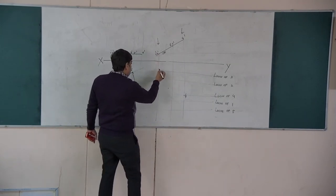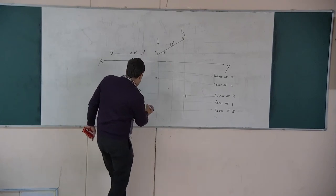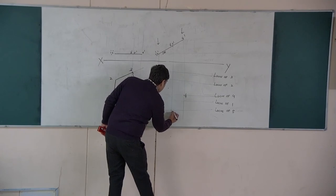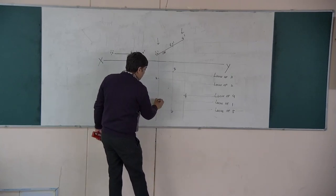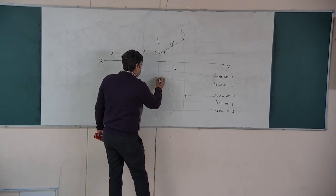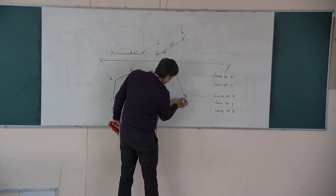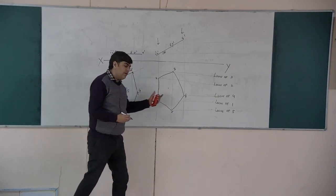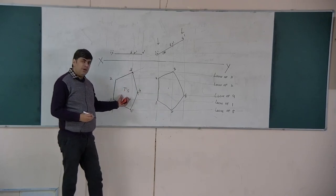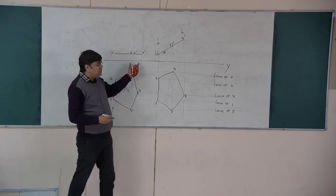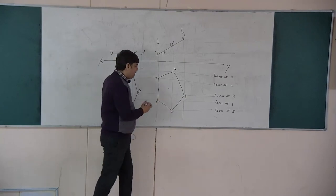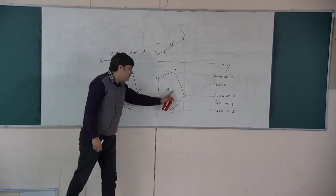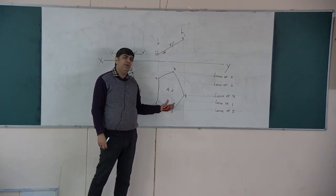Now the projector for vertex 1 and vertex 2 come down and give us points 1 and 2. Vertices 3 and 5 - the lowest one is vertex 5 and the topmost is vertex 3. Join these points using a pencil: 1 to 2, 2 to 3, 3 to 4, 4 to 5, and 5 to 1. So this is also a pentagon - this was the regular pentagon showing true shape - the moment we inclined this pentagon at angle theta, this becomes your apparent shape in the top view.